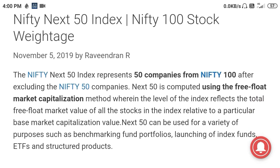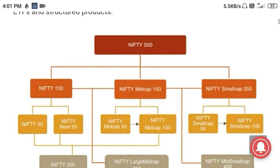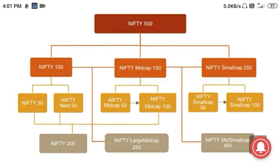The Nifty Next 50 contains large cap stocks ranked after the Nifty 50, and it is part of the Nifty 100. Both Nifty 50 and Nifty Next 50 are included in Nifty 100. Looking at this flowchart, you can understand how the Nifty 500 is divided into Nifty 100, Mid Cap 150, and Small Cap 250. The Nifty 100 is split into Nifty 50 and Next 50 — these are the top 100 large cap stocks.